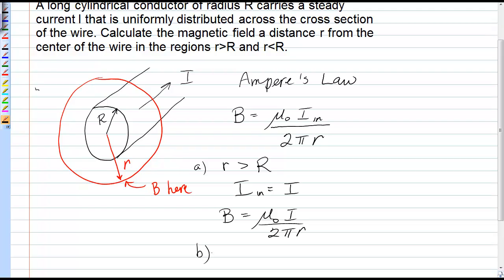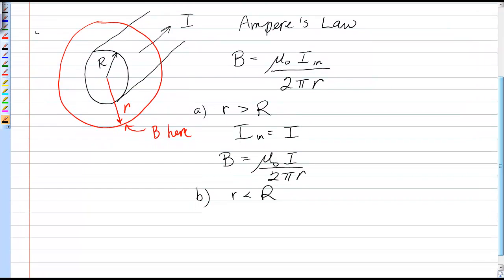Let's now go inside the wire, r less than R. In this case, we won't have 100% of the current going through our Ampereian circle, because now our Ampereian circle will be inside this conductor with radius r, and it's only the amount of current that's in this red circle that goes into Ampere's Law. In order to find that amount of current, we need to define a current density.